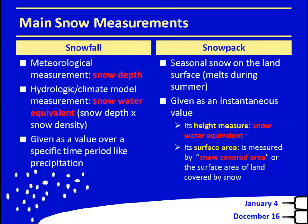Snow water equivalent is a much cleaner measurement for climate and hydrologic purposes because you're tracking how much water is actually in the snow — which varies greatly depending on temperature, since snow can be very fluffy and light or very dense. Snowfall is taken as a value over a specific time period, similar to precipitation. The other main snow variable is snowpack — the seasonal snow on the land surface that collects during winter and melts during summer, given as an instantaneous value of what's seen on the ground.